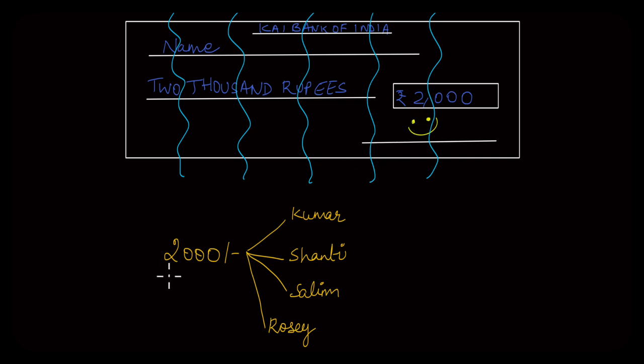How then would you split this 2000 among your four friends? You would need to convert this bigger amount into smaller amounts like say 500 and then distribute it among your friends.